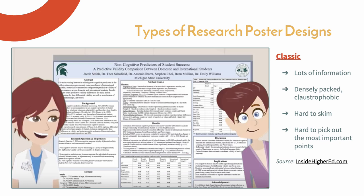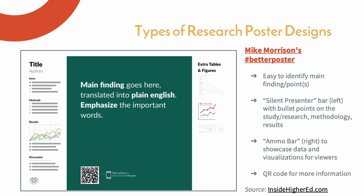This is a classic research poster example. It contains a lot of information, is hard to skim, and even harder to pick out the most important points. This next example represents the best practices discussed during this presentation. There is not a lot of text, easy-to-read graphics are distributed throughout the poster, and white space helps to break up the content. There is even a QR code viewers can scan to get more information or be directed to a digital version of your paper.